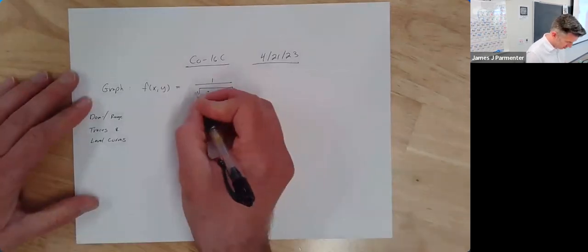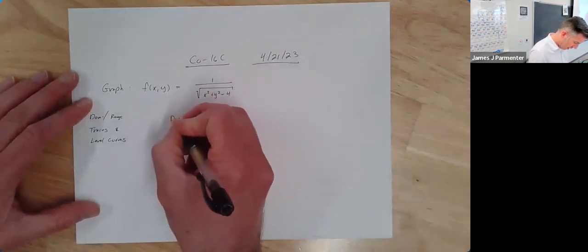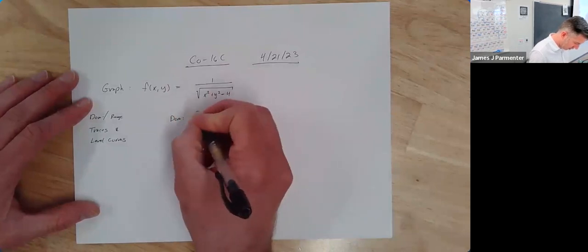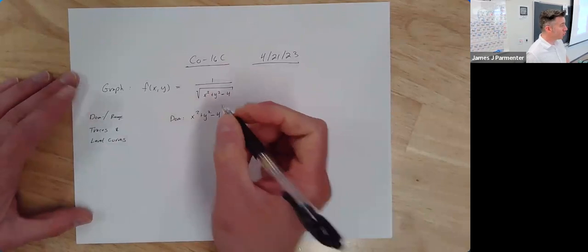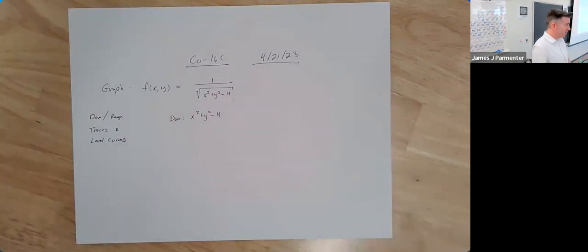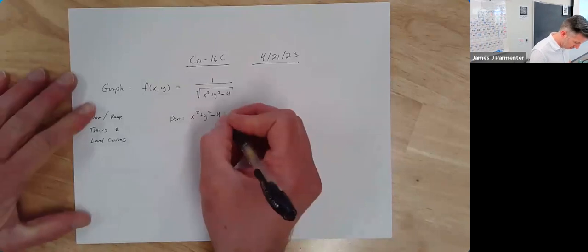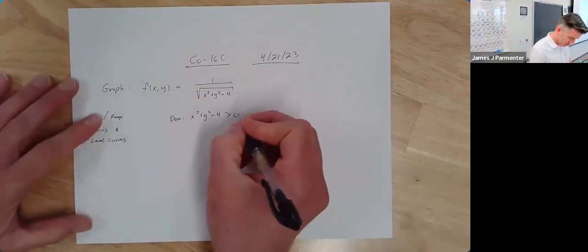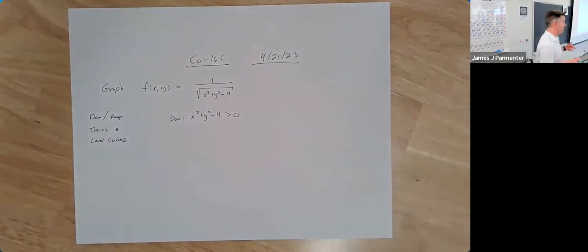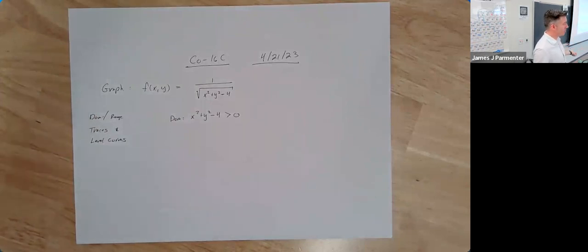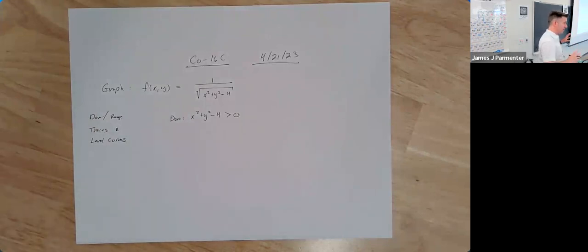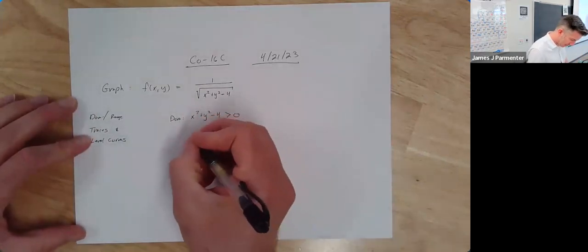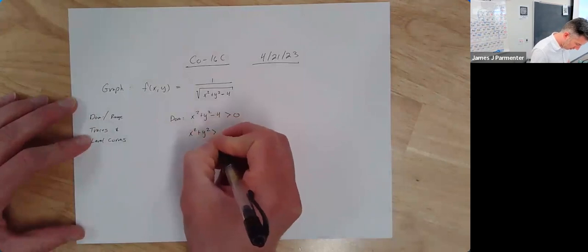I'm going to combine that into one condition. For domain, the inside of the square root — x squared plus y squared minus 4 — normally I'd say greater than or equal to zero, but since I don't want it to equal zero either, I'll say greater than zero. I'm going to rewrite this as x squared plus y squared greater than 4.